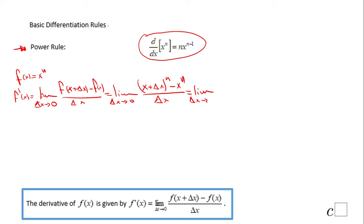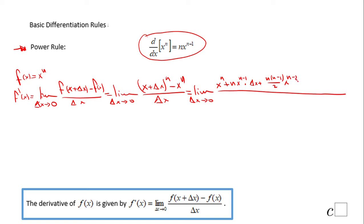This limit becomes the limit as delta x approaches zero. Now, expanding (x + delta x) to the n using the binomial theorem, we get x to the n plus n times x to the n minus 1 times delta x plus n(n-1)/2 times x to the n minus 2 times delta x squared plus … plus delta x to the n, minus x to the n, all over delta x.